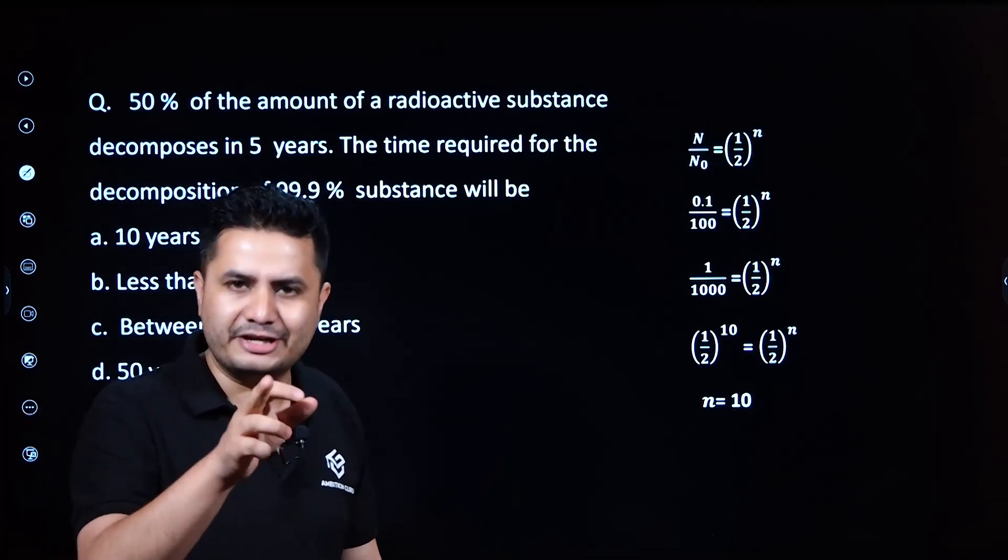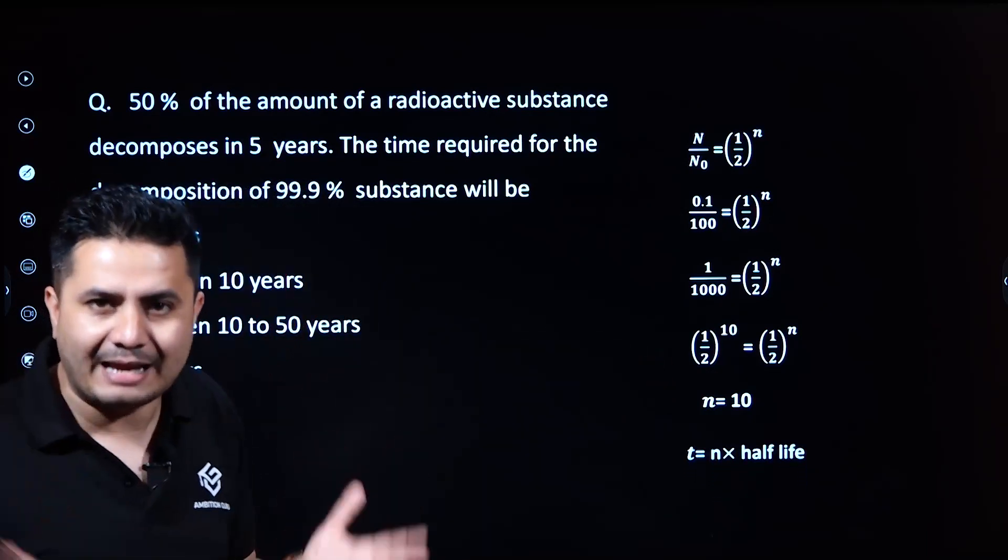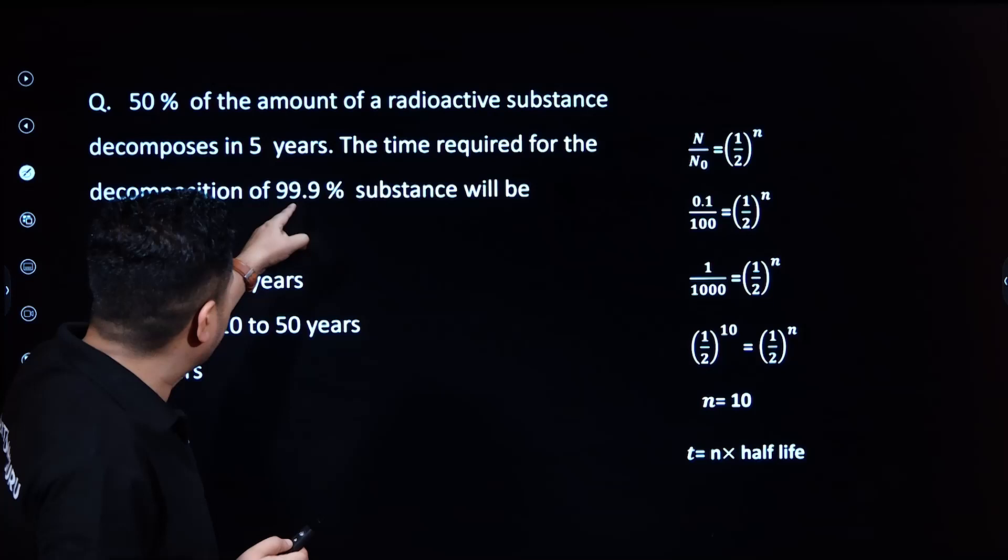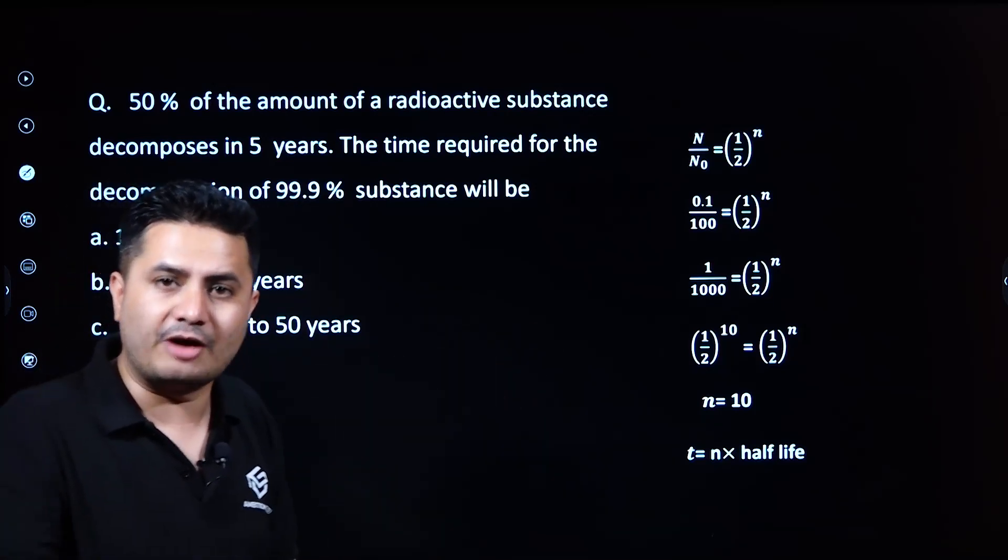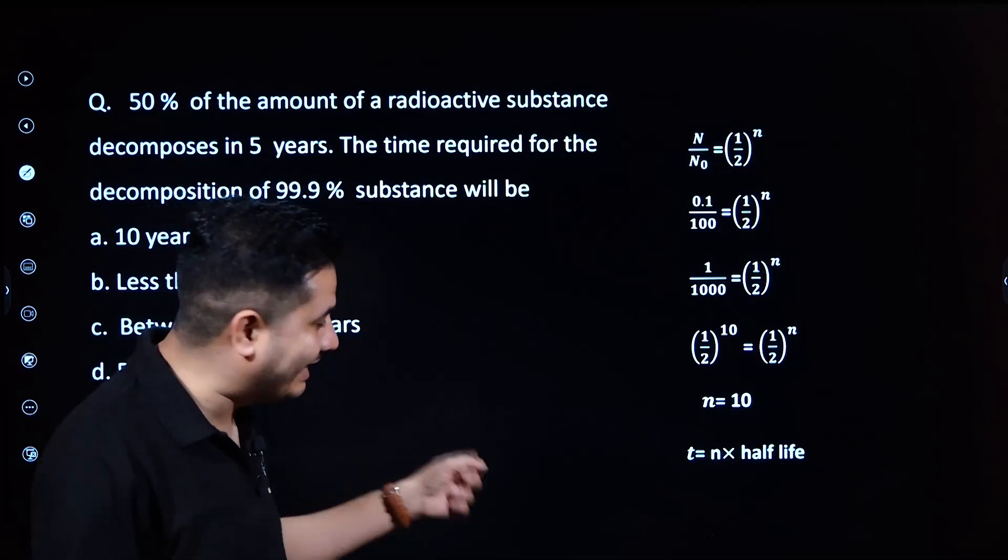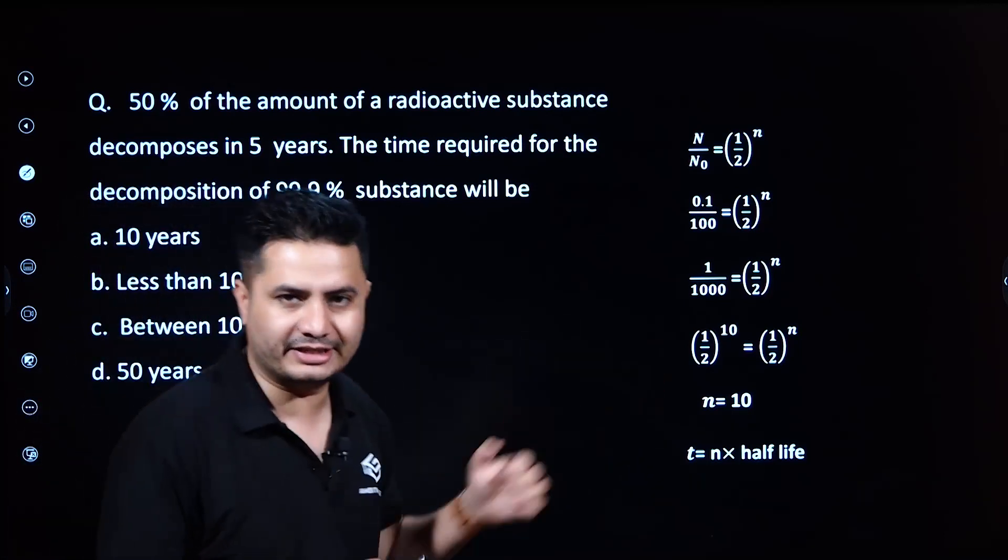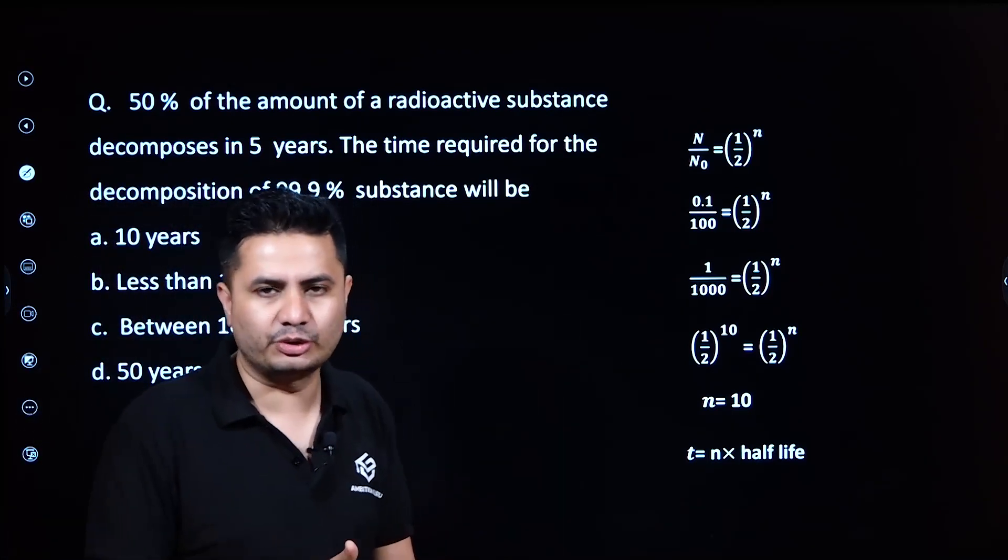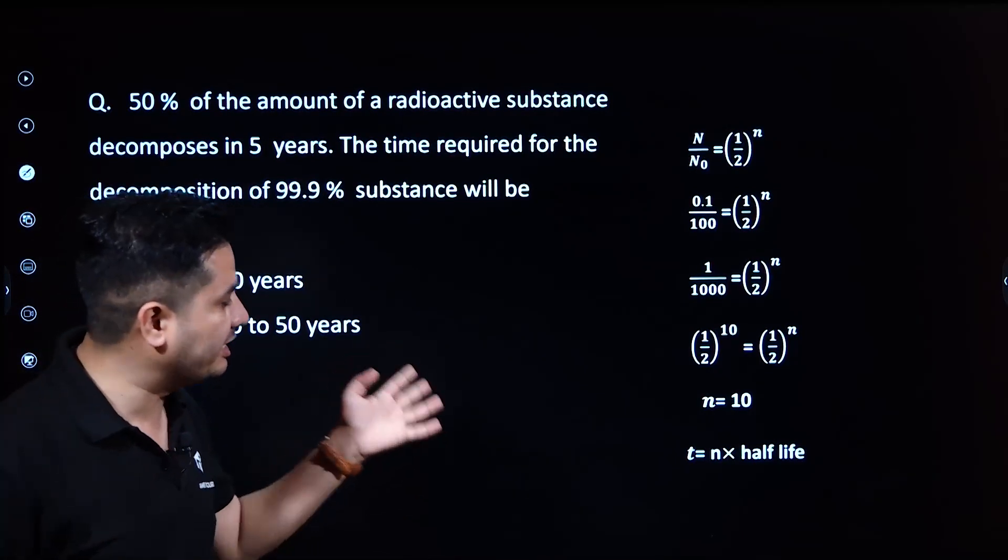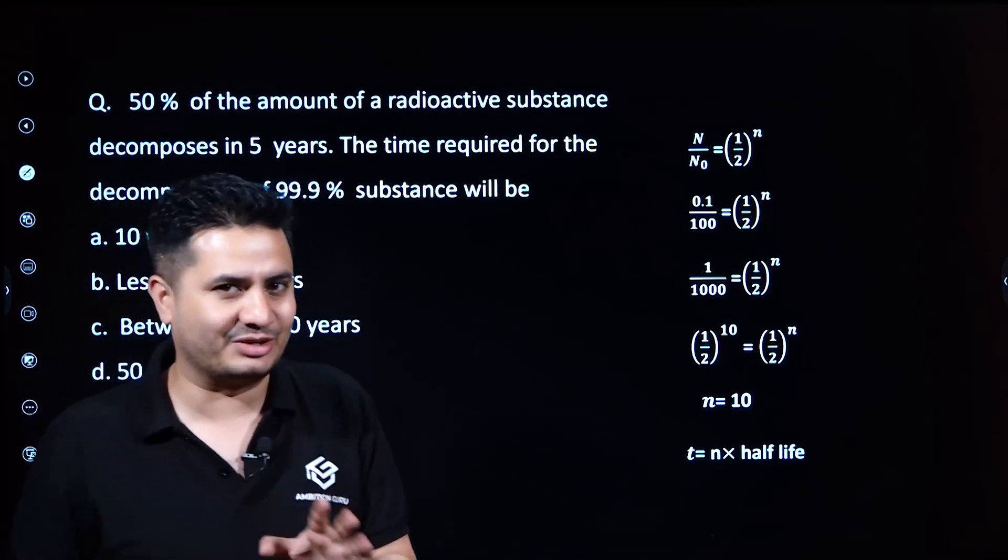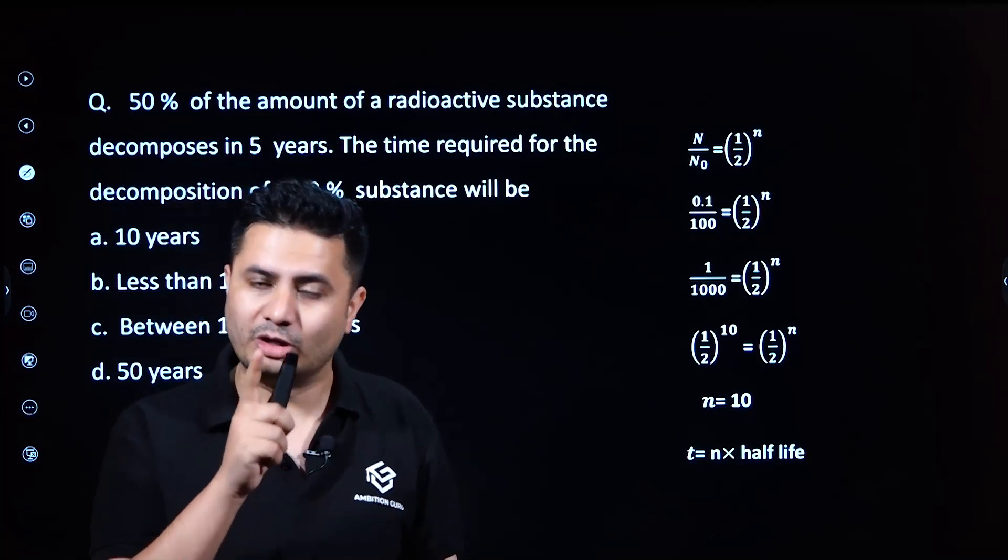The time required for the decomposition of 99.9% can be calculated as the number of half-life periods multiplied by the half-life period duration. The answer is n × t½ = 10 × 5 years = 50 years.